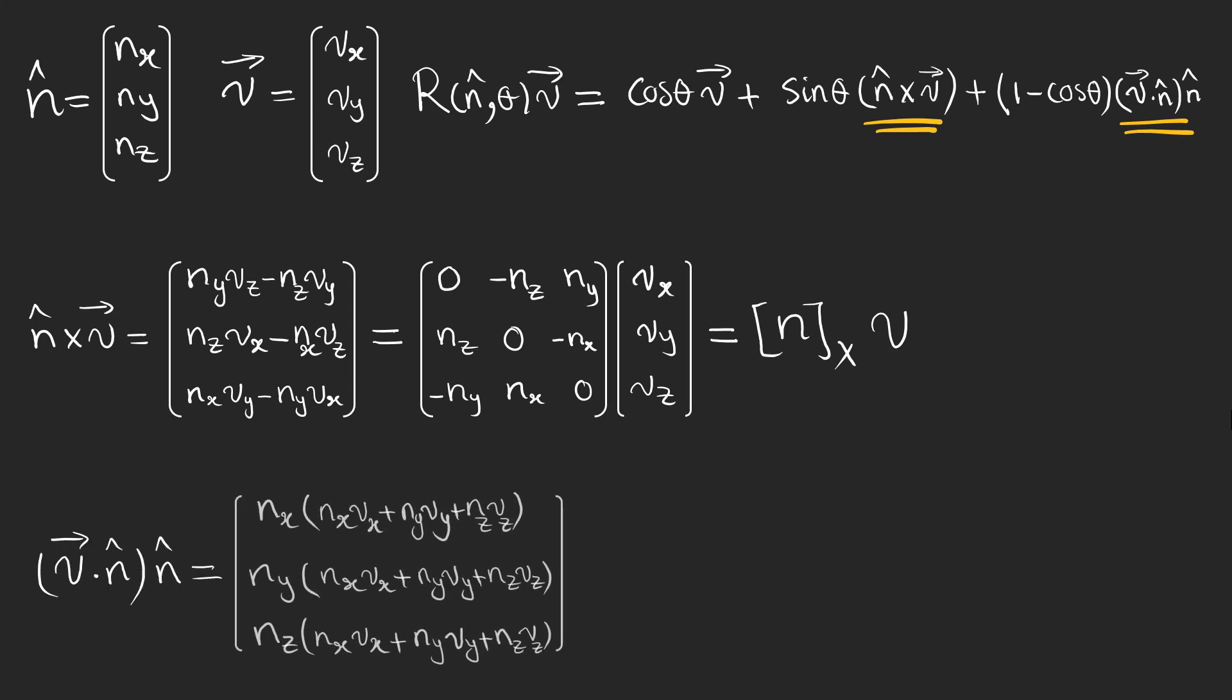This is the other term that contains a dot product of v and n, which gives a scalar, multiplied by the unit vector n. Again, we are interested in separating the influence of our matrix on the column vector v, so we write it as a square matrix acting on column vector v. You might not believe it but this square matrix is the product of n with its transpose.